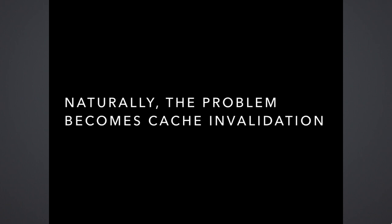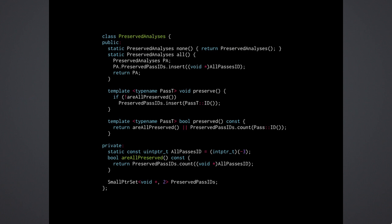How do we do cache invalidation of analyses? First, we need to be able to name a set of analyses we care about preserving. The new pass manager provides a preserved-analyses set class with convenient methods: you can say you preserve none, you preserve all, you can mark preservation of specific analyses, query the set, or intersect two sets. This lets us talk about which analyses we're trying to preserve across all the APIs.